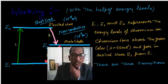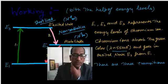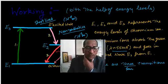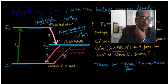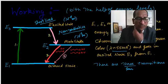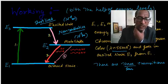E1, E2, and E3 represent the energy levels of chromium ion. Chromium ion absorbs green color with approximate wavelength 550nm and goes into excited state. There are four transitions. Number one is absorption. Number two is non-radiative emission. Third transition is spontaneous emission - one ion comes into ground state and emits a photon.